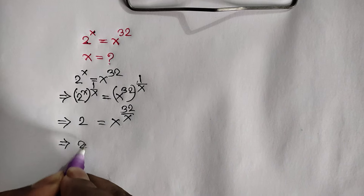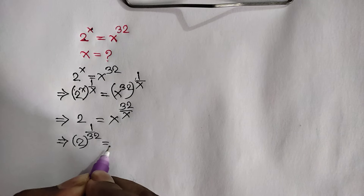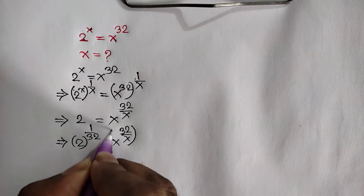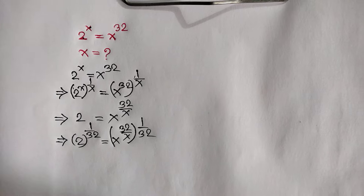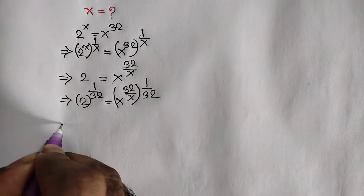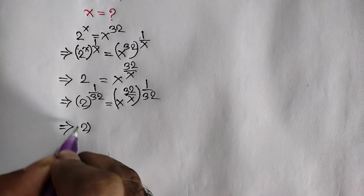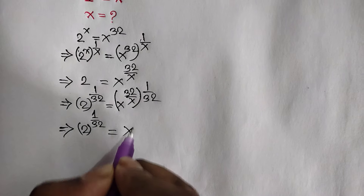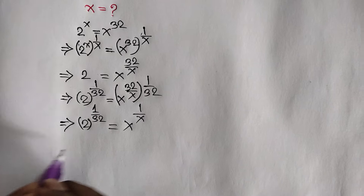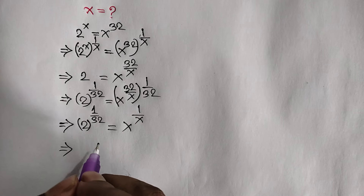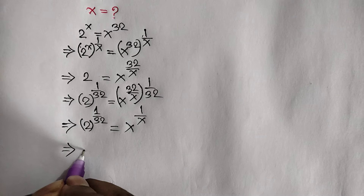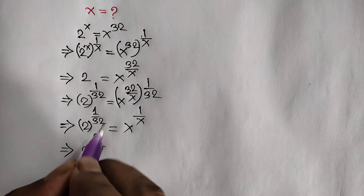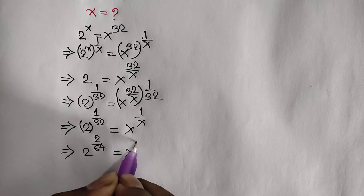Here we can write x to the power 32 over x, then we move this power 32, so we can write 2 to the power 1 over 32 is equal to x to the power 32 over x, whole to the power 1 over 32. This 32 cancels out this 32, so it will be remaining x to the power 1 over x. Now we can rewrite this form: 2 to the power 2 over 64.